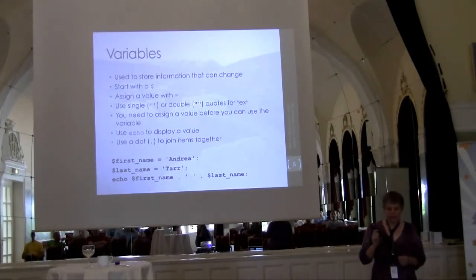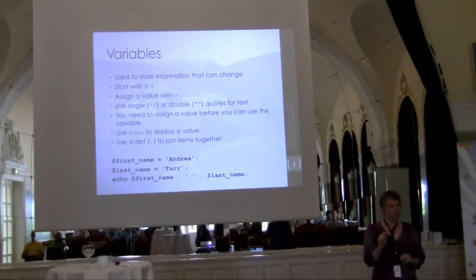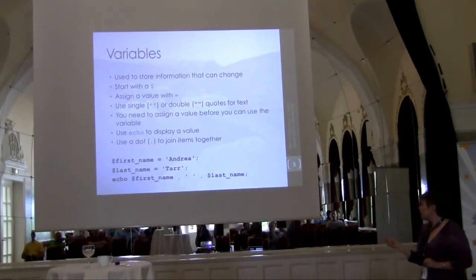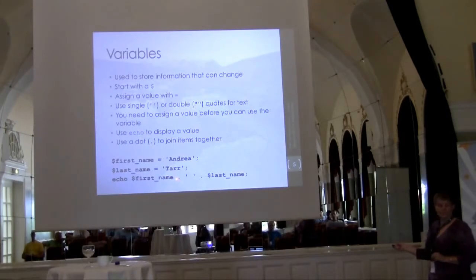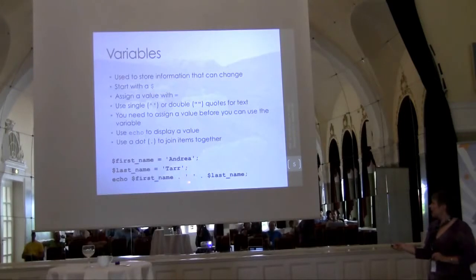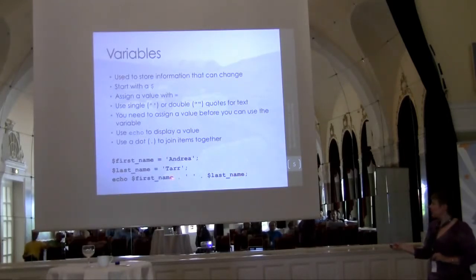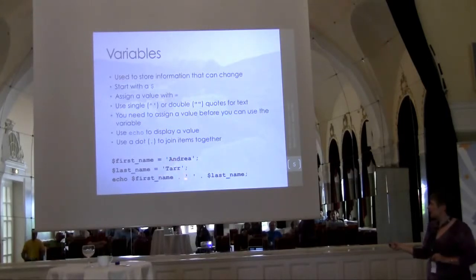If you need to join things together, you concatenate using a period. So for example you've got a first name variable and a last name variable — you take the first name, add a dot to concatenate, then concatenate a space, then another dot to concatenate the last name to get 'Andrea Tarr'. The white space around those dots doesn't matter; they could be right up next to the variable names.